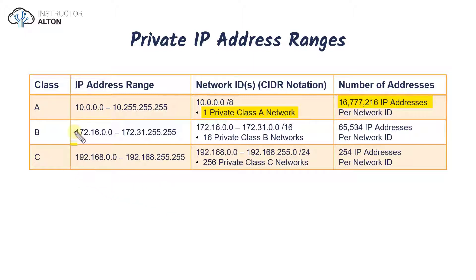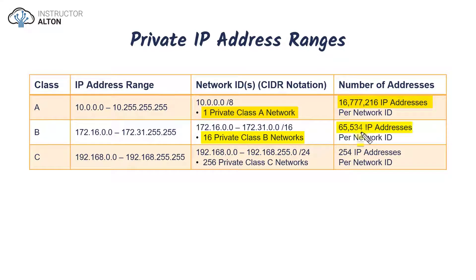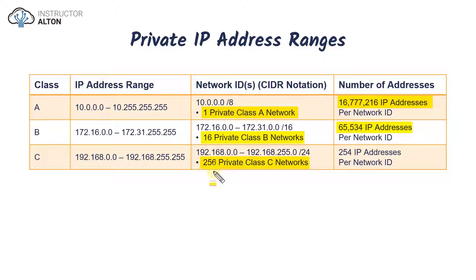For Class B, a total of 16 private Class B networks were defined, ranging from 172.16.0.0 to 172.31.255.255. Each is the standard Class B size — roughly 65,000 IP addresses per network. For Class C, there are a total of 256 private Class C networks: 192.168.0.0 to 192.168.255.255, with 254 IP addresses per network.